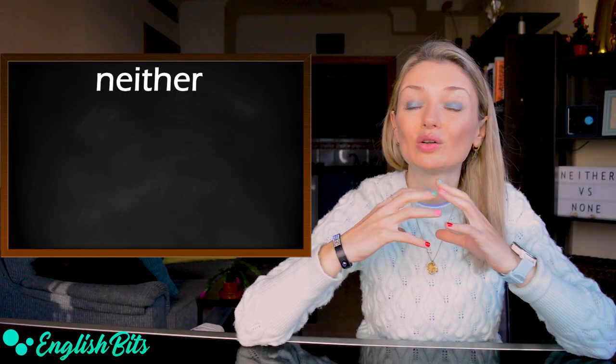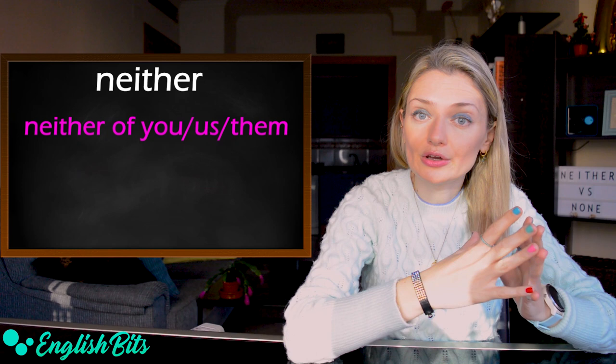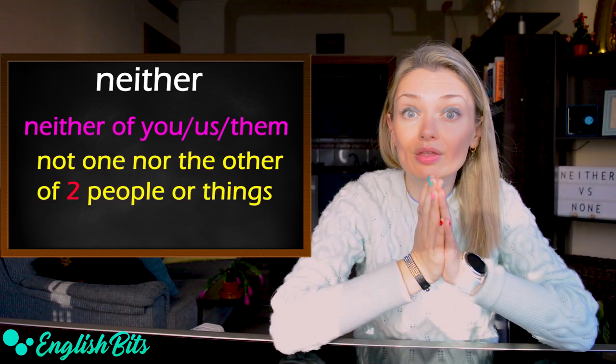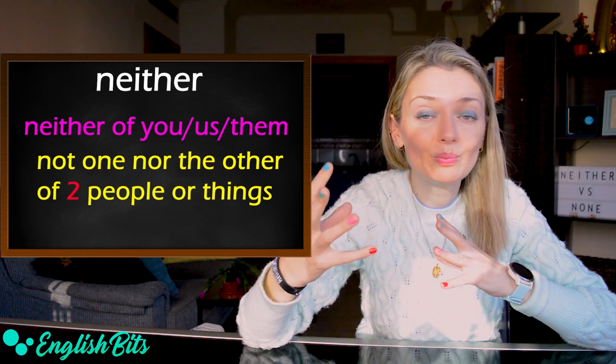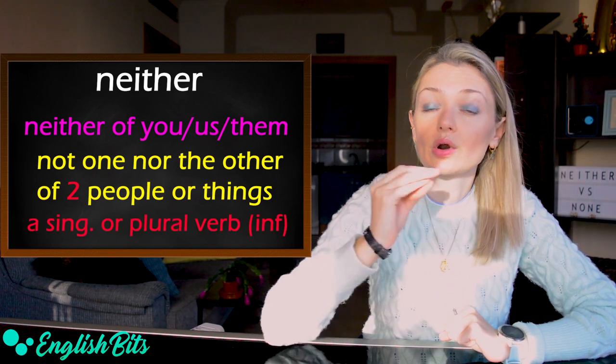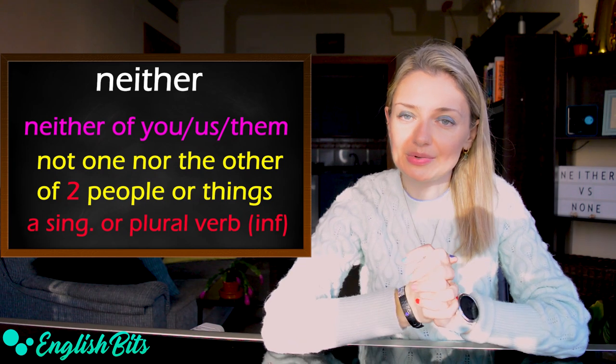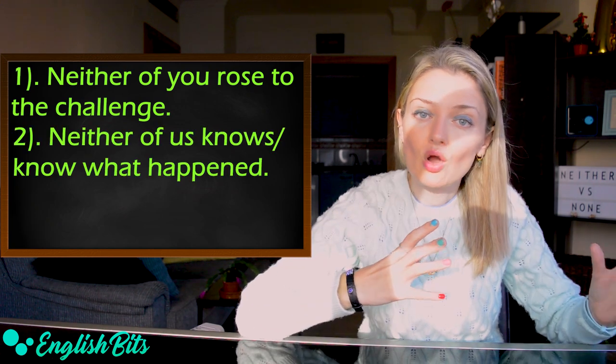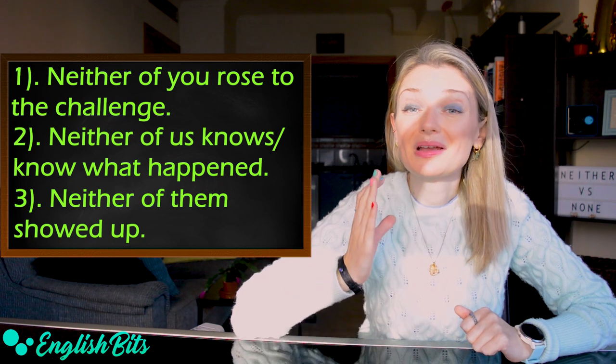First we're going to focus on neither. It can be pronounced as neither or neither. The first point: you can use neither of you, of us, of them, when you want to say that it's not one nor the other of two people or things. The key point here is that there are only two people or things in existence. After neither of, we can use both a singular or plural verb. A plural one is more informal. Now let's look at some examples. Neither of you rose to the challenge. Another example: neither of us knows or know what happened. And one more example: neither of them showed up. The phrasal verb to show up means to arrive.